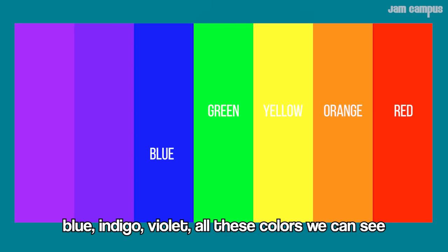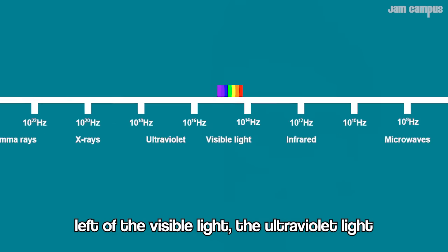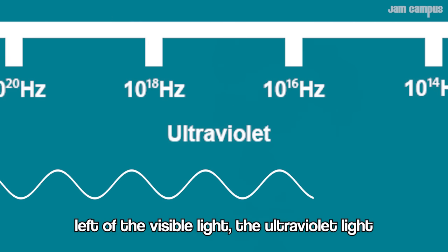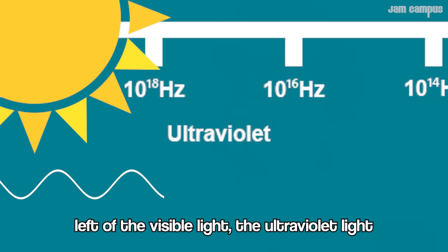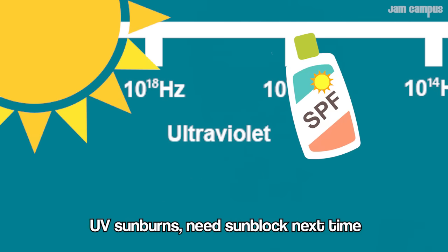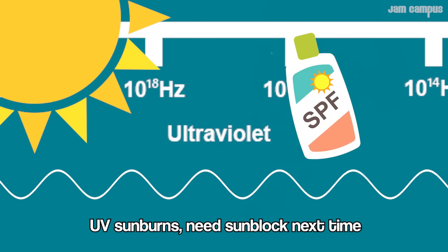Visible light frequency: 430 to 790 terahertz. Red, orange, yellow, and green. Blue, indigo, violet — all these colors we can see them. After the visible light, the ultraviolet light — UV, summer needs some light.